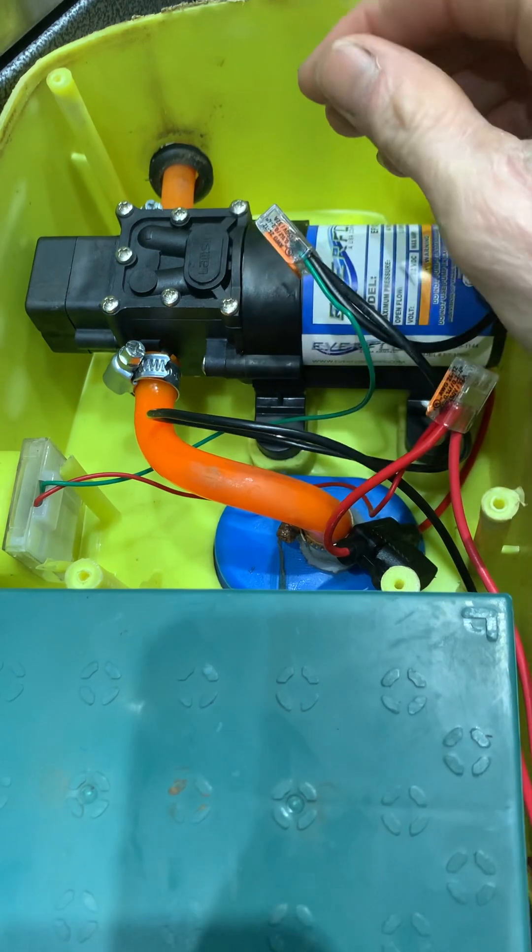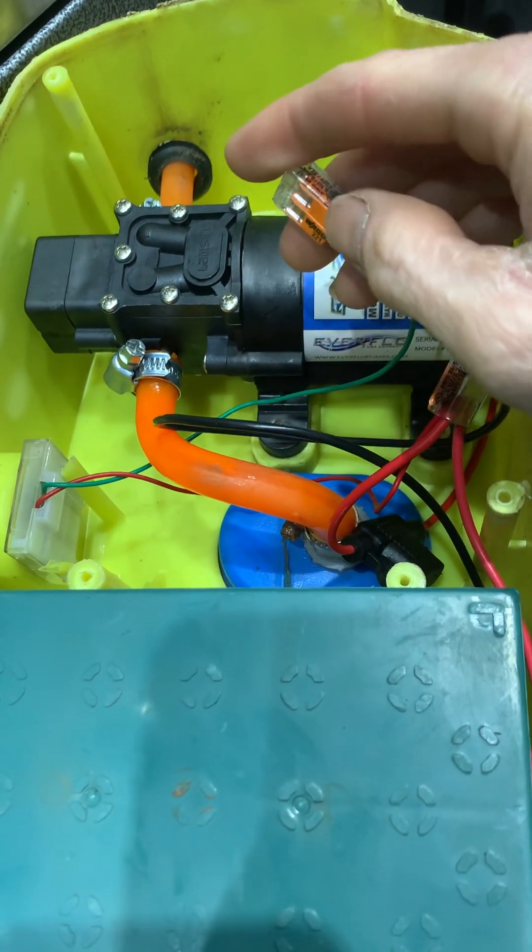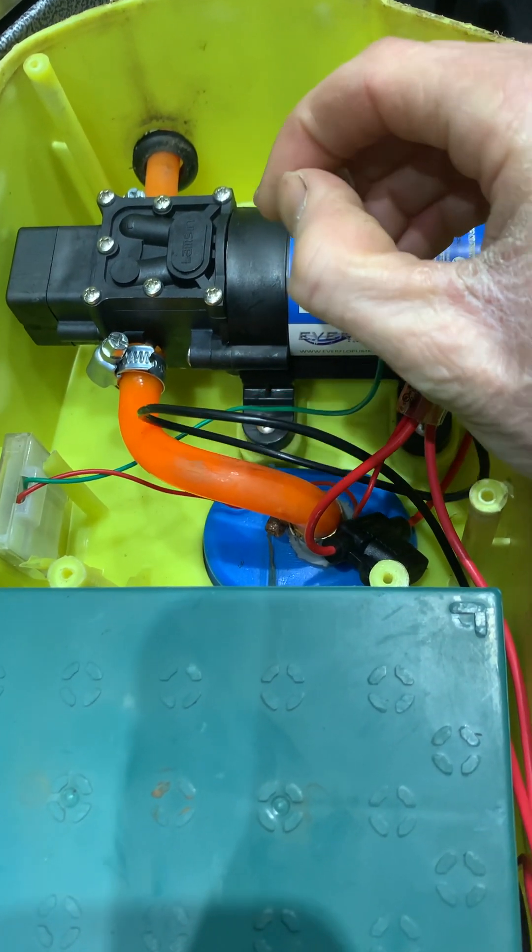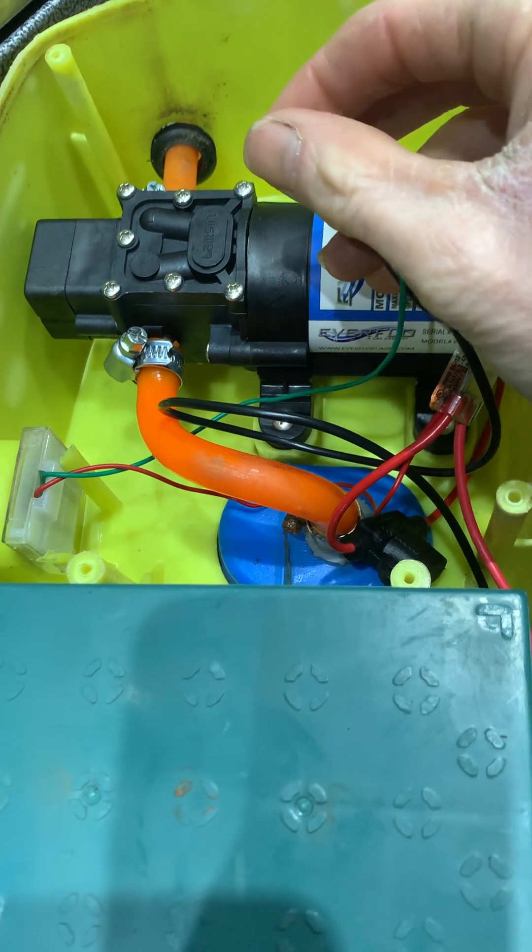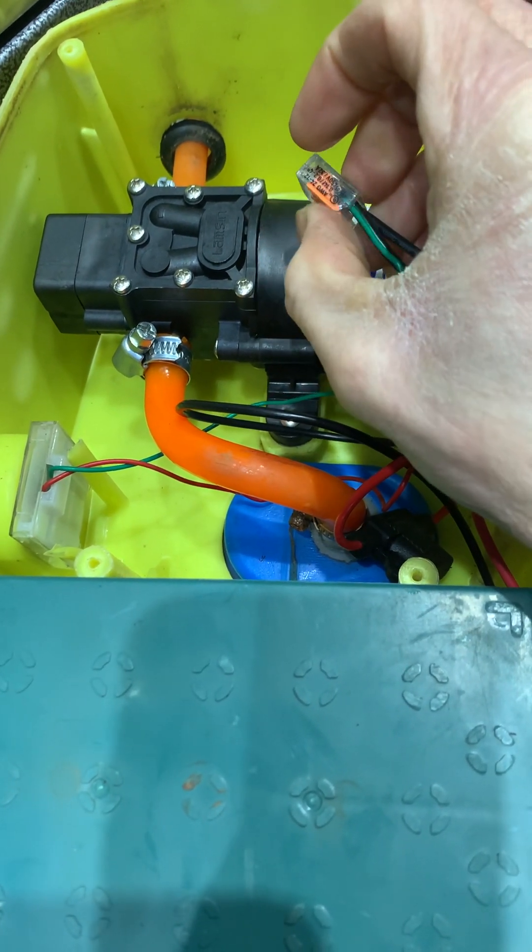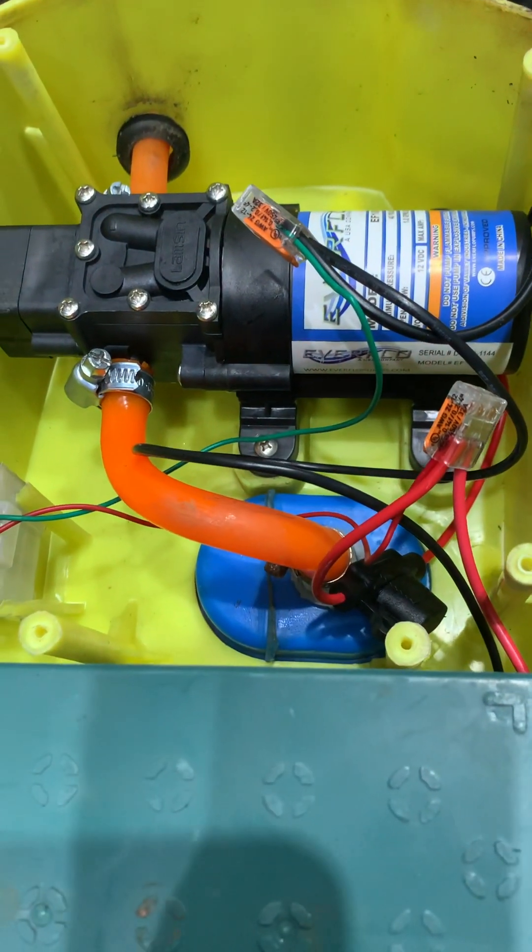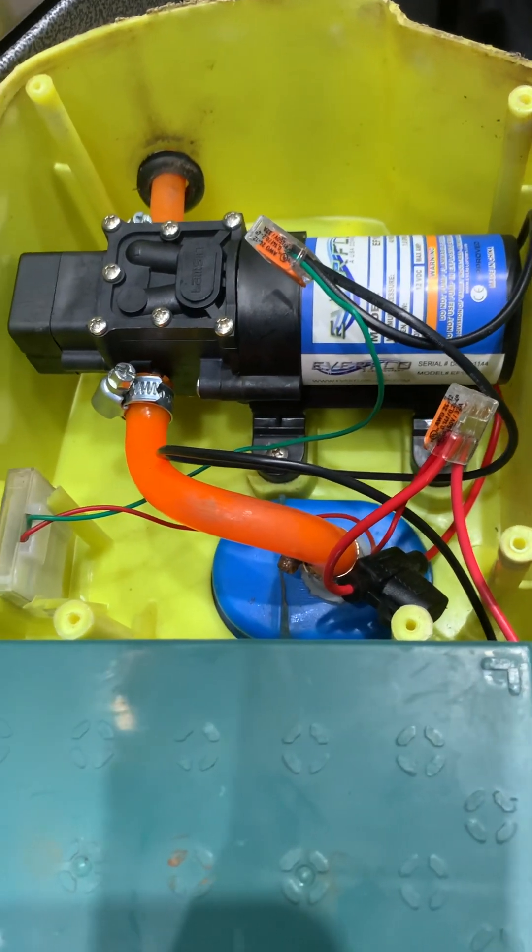So if this pump fails now, all you need to do is just lift these tabs like so, pull the cable out, slide the new cable in, and clamp it down. So Wago connectors are really good for interchangeable wiring connections.